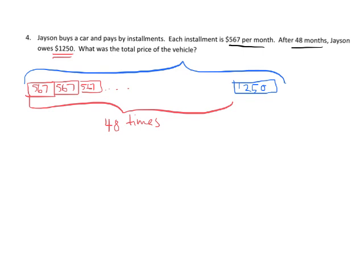So what we're going to do is we're going to multiply 567 times 48. Then we're going to add in this extra $1,250. So let's do the traditional method. 567 times 48. So first we're going to multiply by the 8. So 8 times 7 is 56. So we're going to carry that 5. And then 8 times 6 is 48. Plus the 5 is 53. So we're going to drop the 3. Now 8 times 5 is 40. Plus 5 is 45.